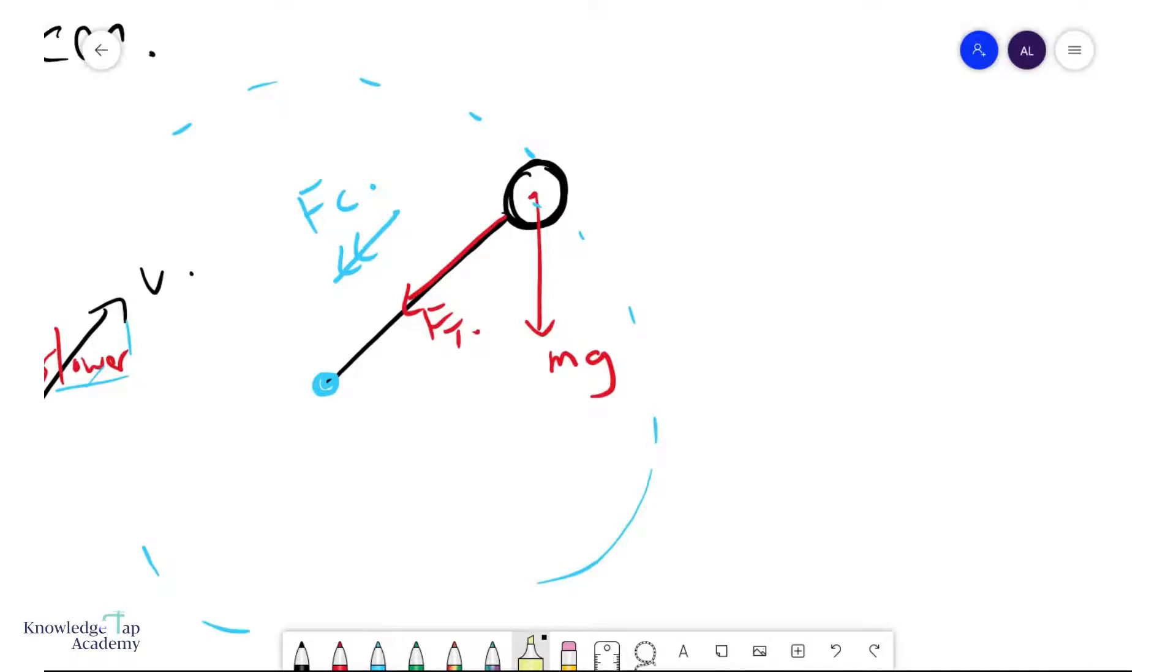And we will resolve our forces into an axis that is parallel and perpendicular to the centripetal force. So if we do that, then of course, you can see that Ft is fine. We need to resolve the weight. So if we knew this angle as theta, then this over here would be mg sin theta, and this over here would be mg cos theta.